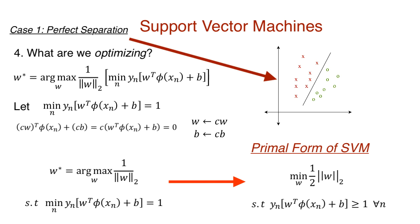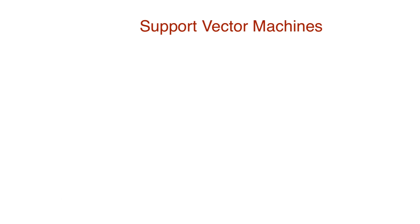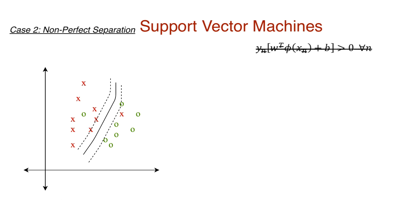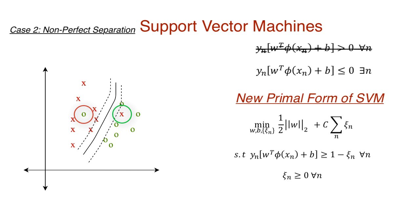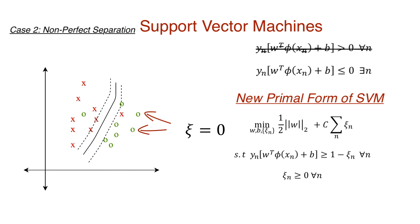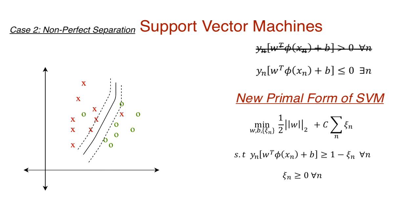This form was constructed assuming the data is separable, meaning all points are always classified correctly. However, in the real world, this is almost never the case. Instead of trying to classify every single training point correctly and risk overfitting, we allow the classifier to make some mistakes. This is done by introducing, for each data point, a slack variable represented by the Greek letter xi (ξ). Think of it as a penalty for incorrect classification — a point classified correctly has a slack of zero, while one classified incorrectly has a positive slack. Introducing xi accounts for non-perfect separation, giving us a new primal formulation.